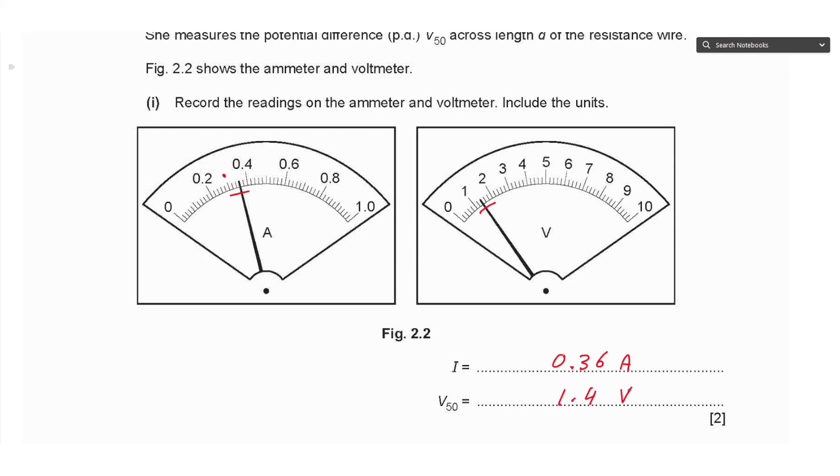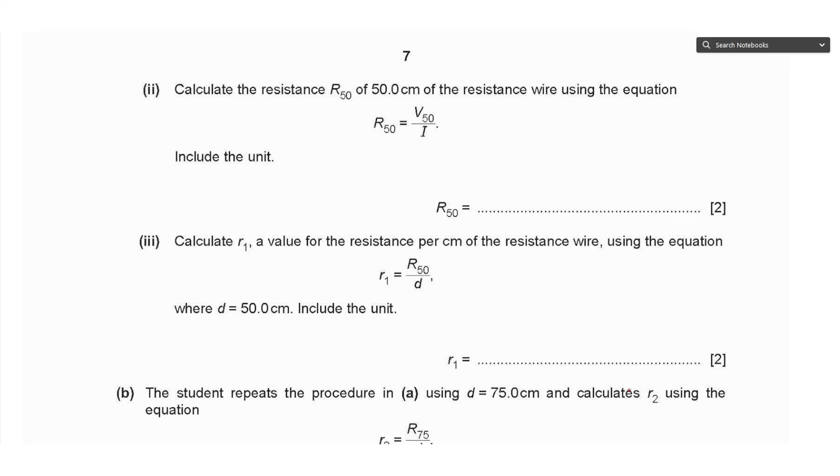Part ii says calculate the resistance R₅₀ of the 50.0 centimeters of resistance wire using the equation R₅₀ equals V₅₀ divided by i. So we divide 1.4 by 0.36, that gives an approximate value of 3.9 ohms.